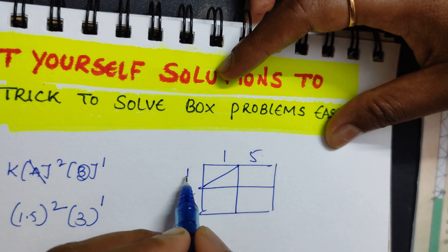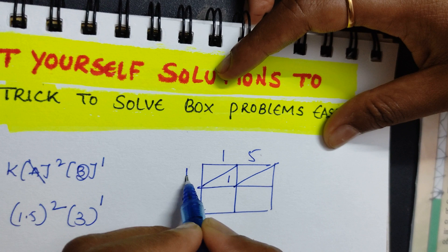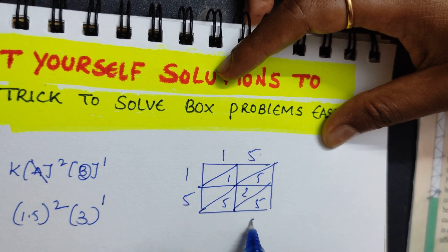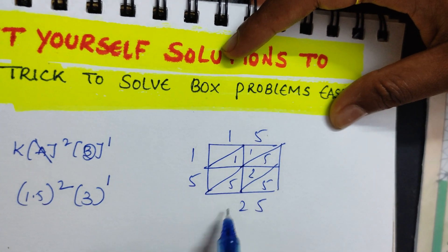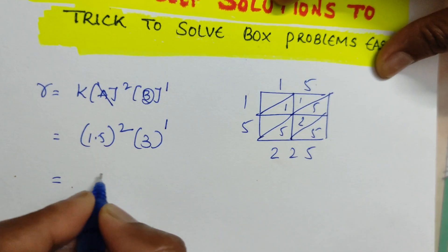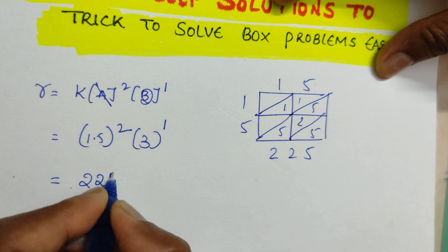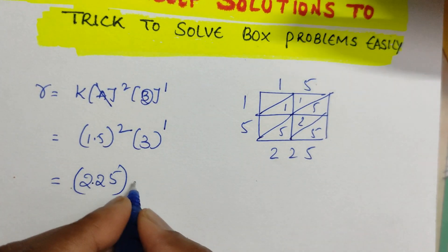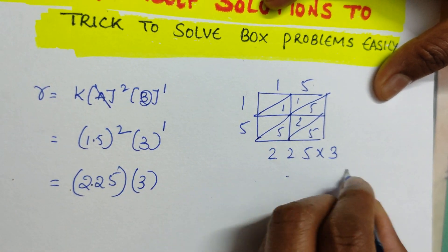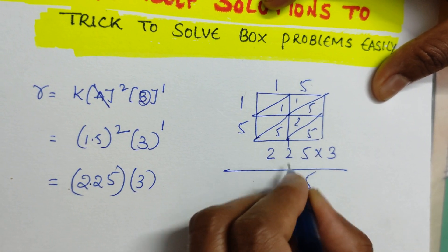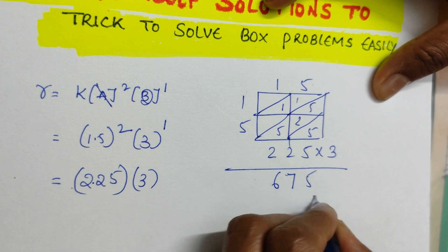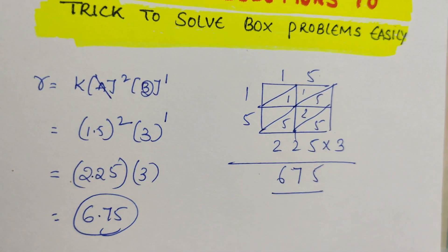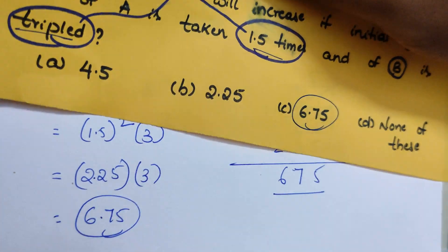So 1.5 into 1.5 — how to do this? I will use the multiplication trick which I already uploaded on our channel; go through it if you want. I am getting 2.25 after removing the decimals and calculating.